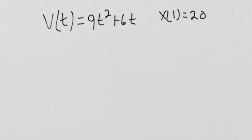Velocity equals 9t squared plus 6t. The position at t equals 1 is 20, so I would encourage you to write this out. x of 1 equals 20.